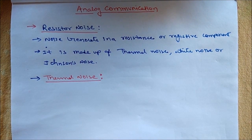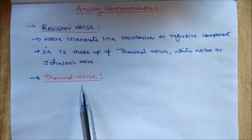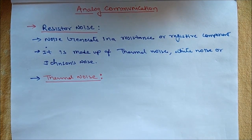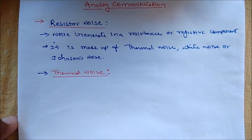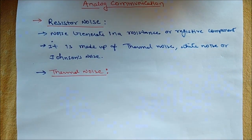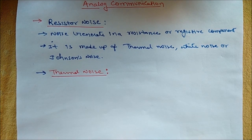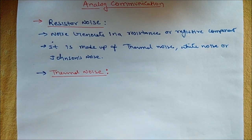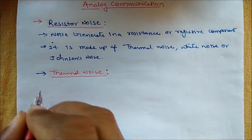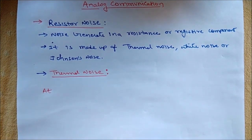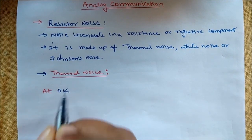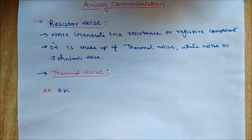Let's quickly see the derivation of how thermal noise is generated. We will derive thermal noise in the form of noise power. By standard definition, thermal noise occurs due to random and rapid motion of molecules inside the component. Due to this random movement, they collide with each other and generate heat, which is known as thermal noise.